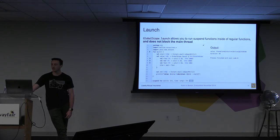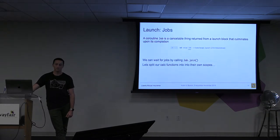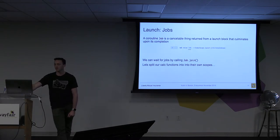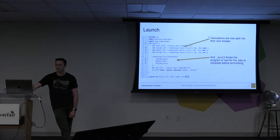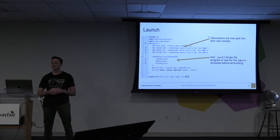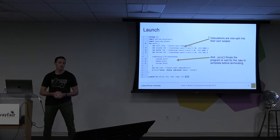The return value of a launch is a Job, which is a cancellable thing. You can tell the program to wait for a job by calling job.join. So if we split our calculations into individual launches, this tells the compiler that these are going to run individually and asynchronously. We wrap the joins in a runBlocking — as I did on lines 10 through 13 — and that tells us to wait for these to complete before returning any sort of value.